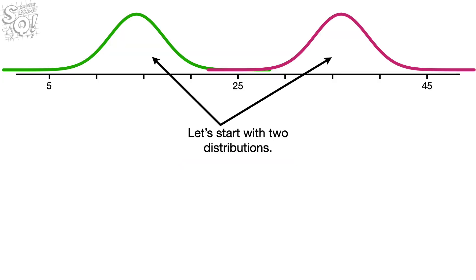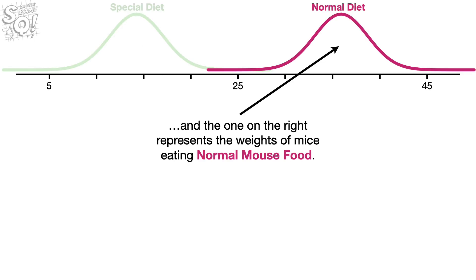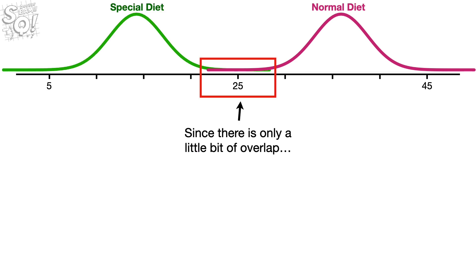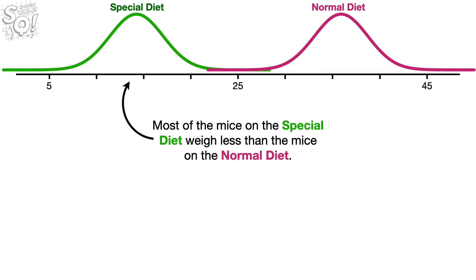Let's start with two distributions. The one on the left represents the weights of mice on a special diet, and the one on the right represents the weights of mice eating normal mouse food. Since there's only a little bit of overlap, it's pretty easy to see the difference between these two diets. Most of the mice on the special diet weigh less than the mice on the normal diet.